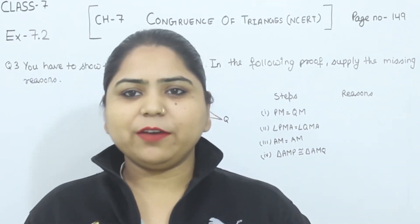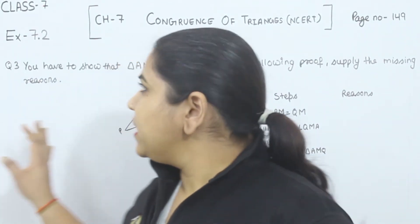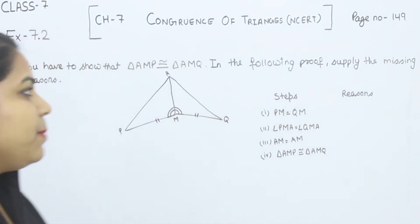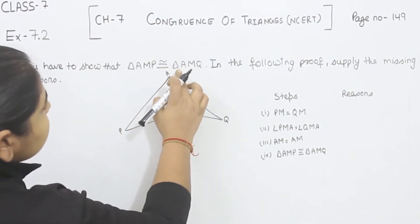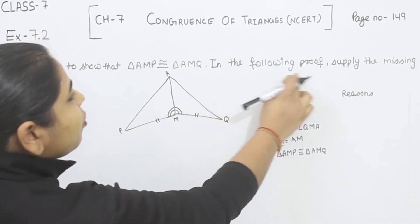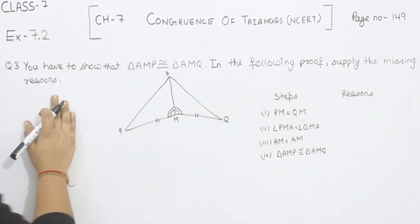Hello everyone, this is Preeti. We are here with another question of exercise 7.2, page number 149, question number 3. You have to show that triangle AMP is congruent to triangle AMQ. In the following proof, supply the missing reason.